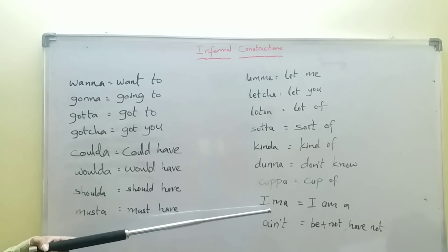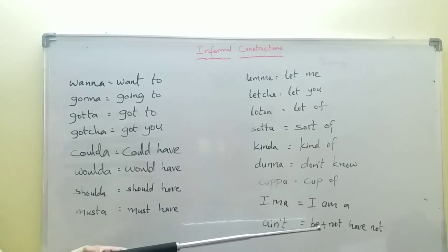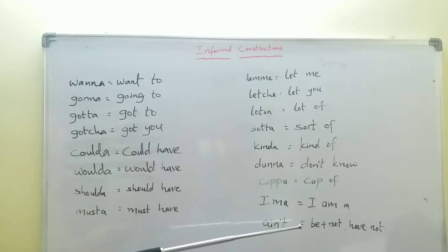The last but not the least: ain't. An interesting construction here is 'be' plus 'not.' What are 'be' forms? Is, are, was, and were. For example: 'She is not a student' becomes 'She ain't a student.'